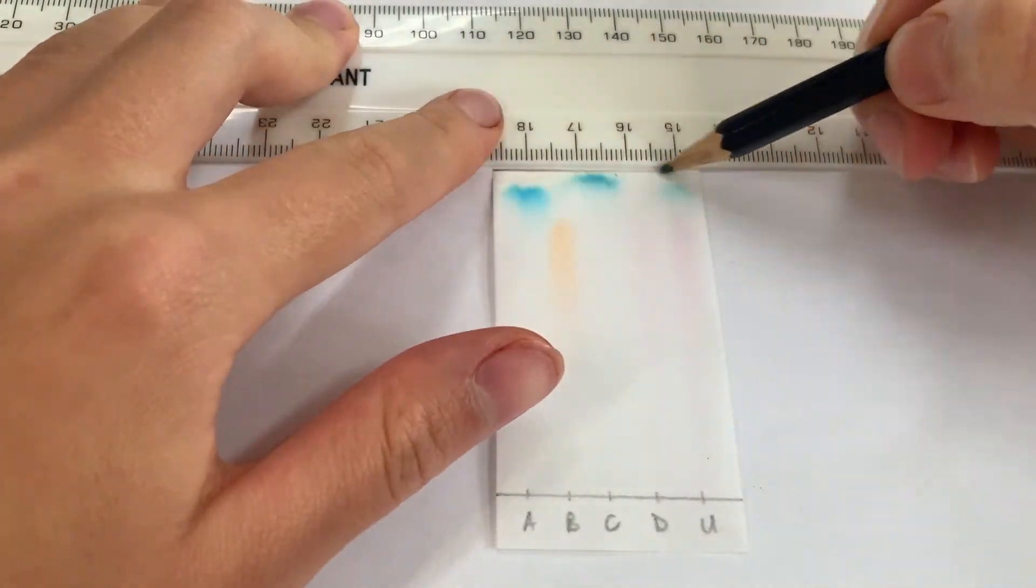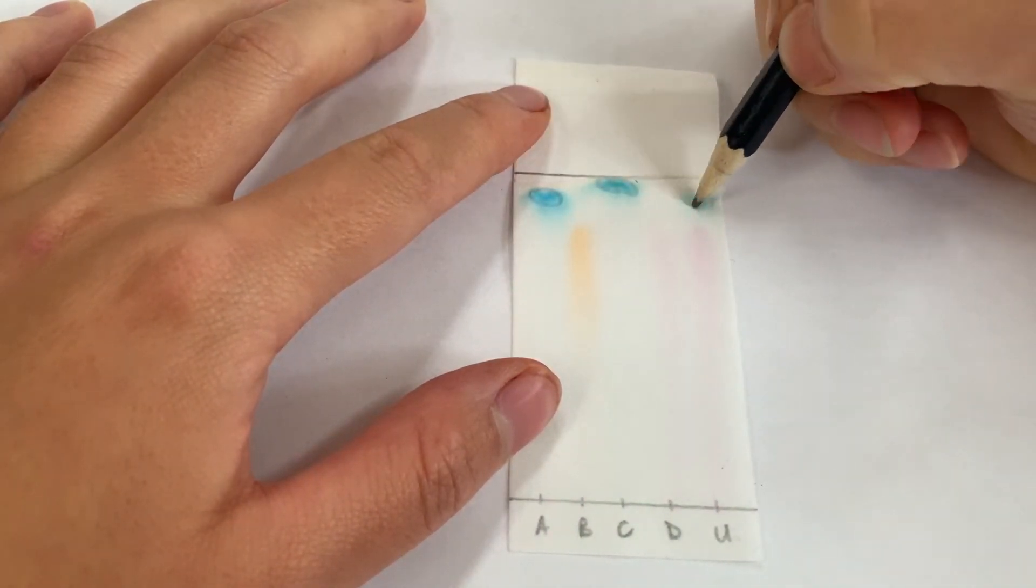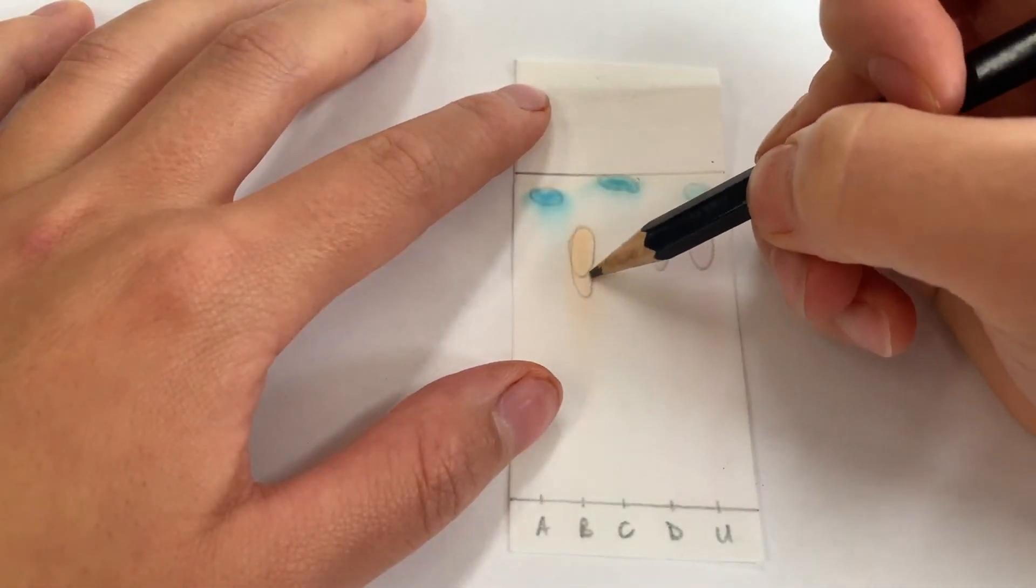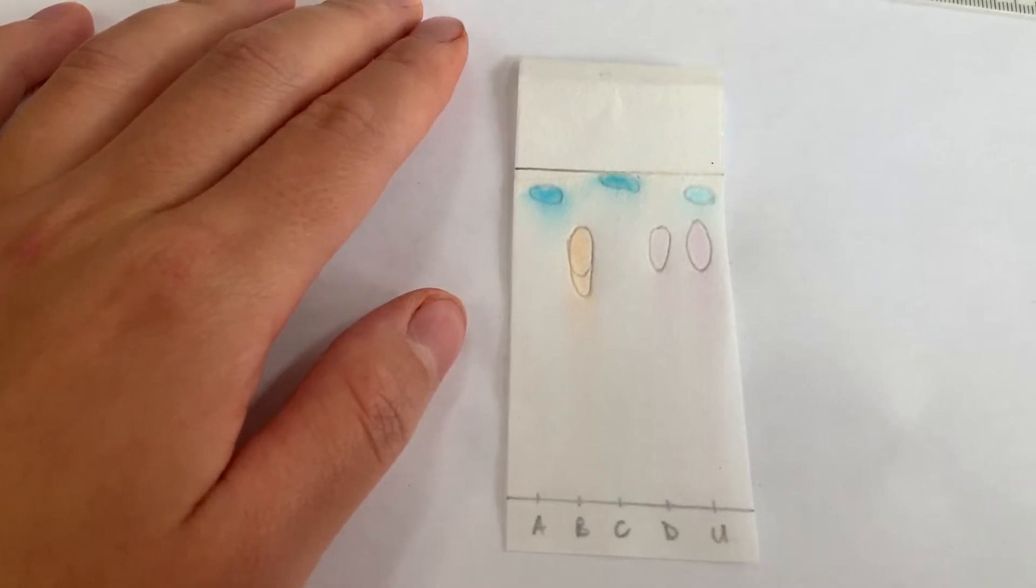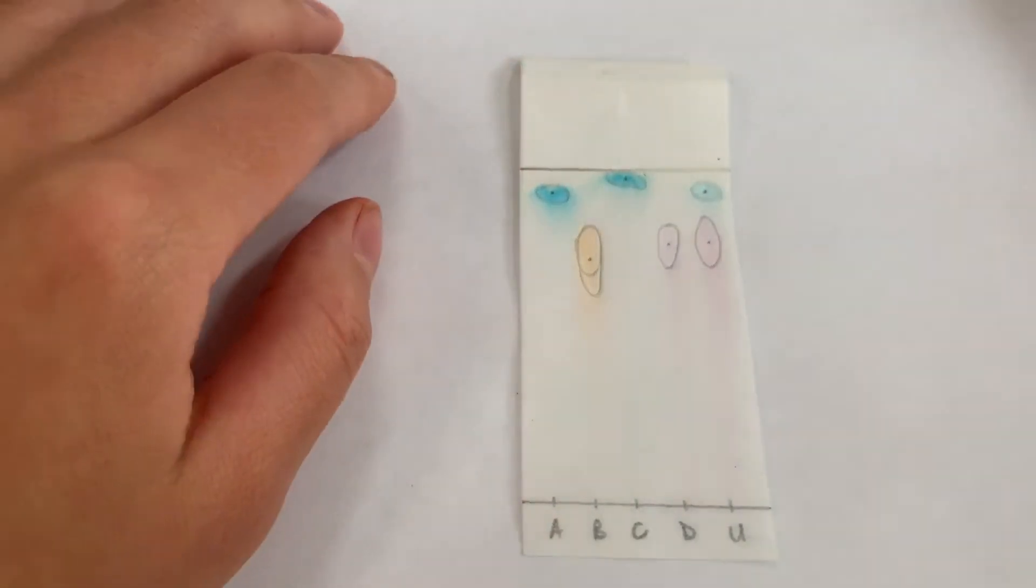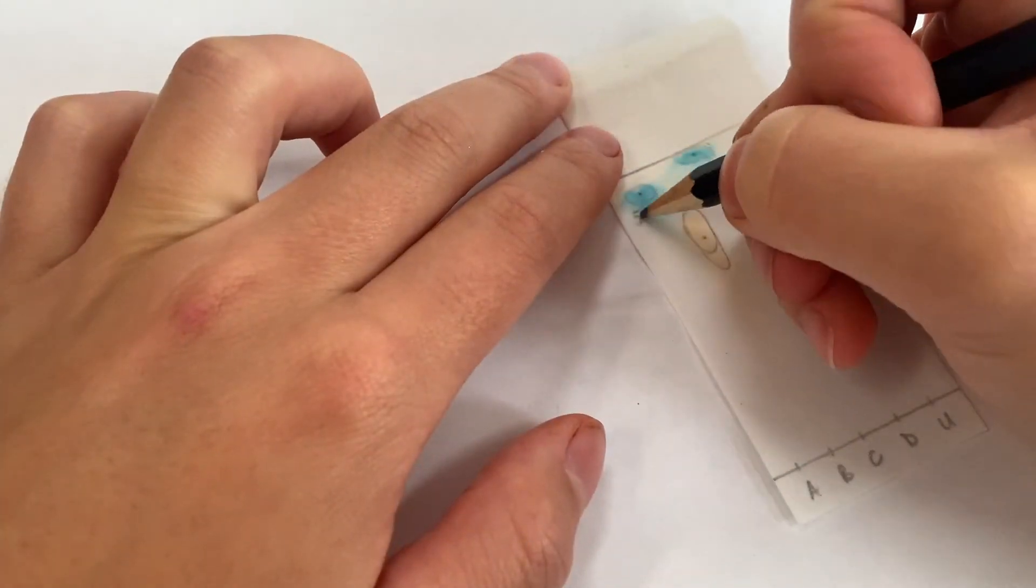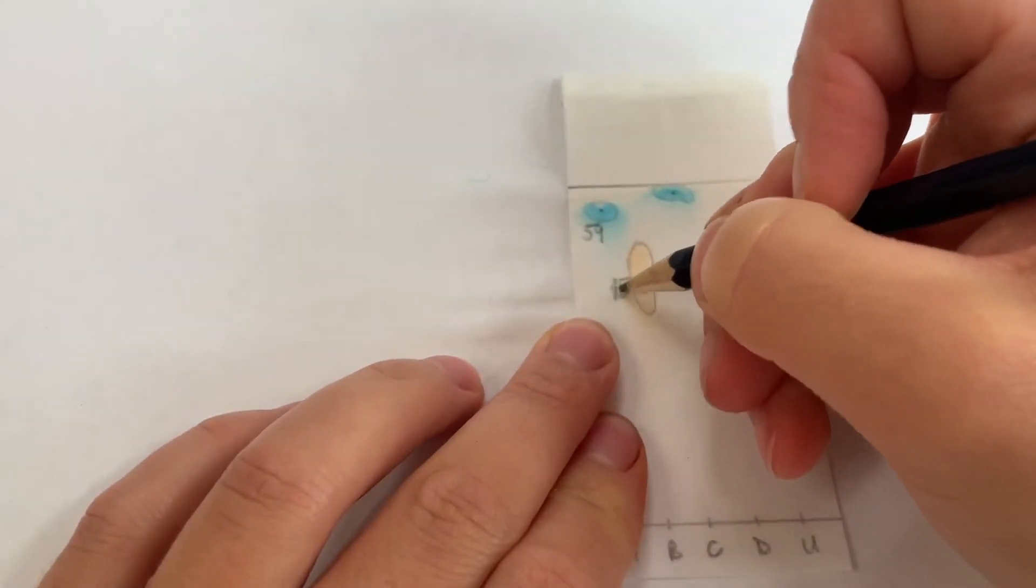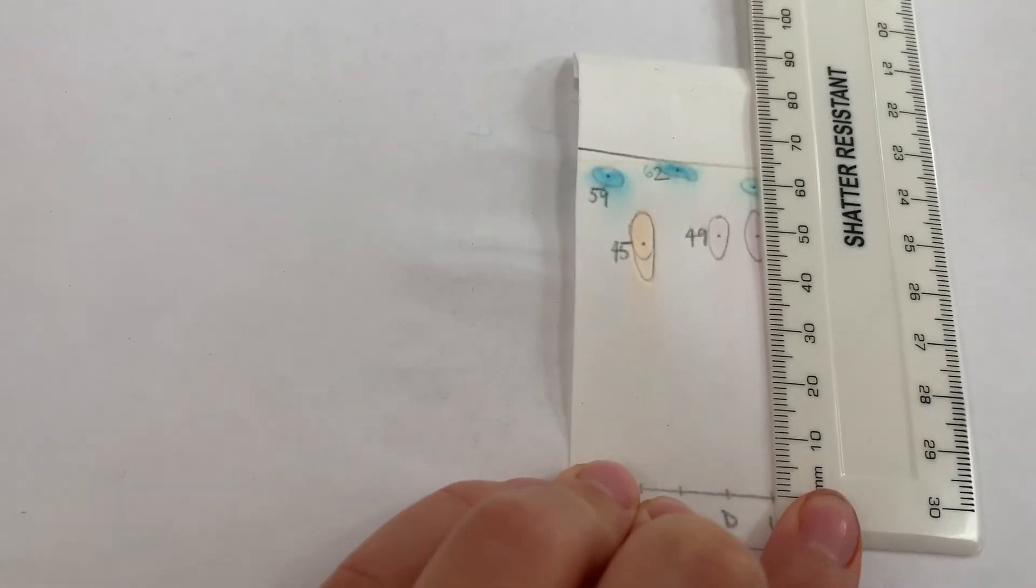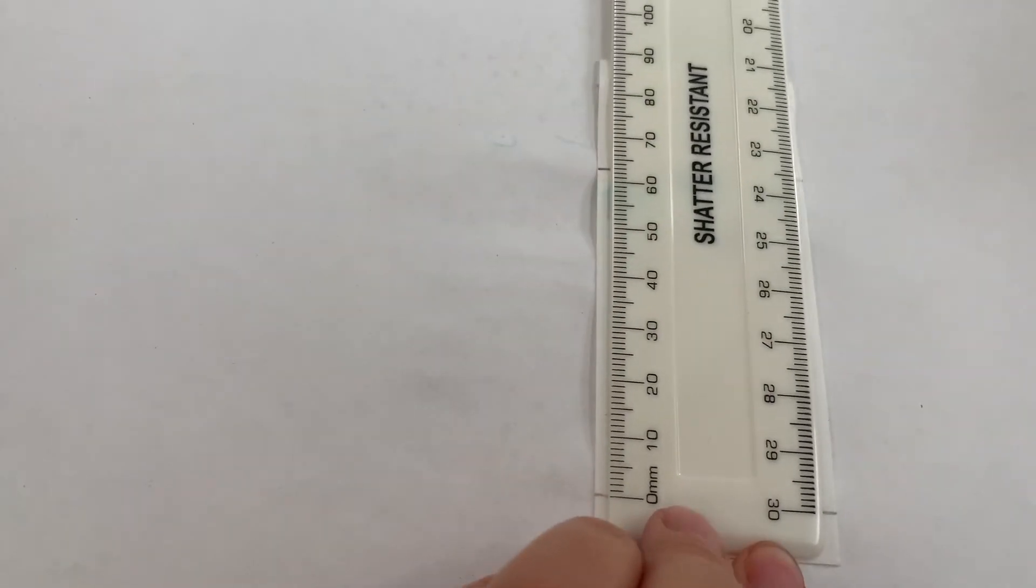Once dry enough to work with draw a line across where the water traveled to. Then draw a circle around each of your compounds and place a dot in the middle of them. Measure the distance from the starting line to each of these dots and then finally measure the distance between the starting line and the solvent front.